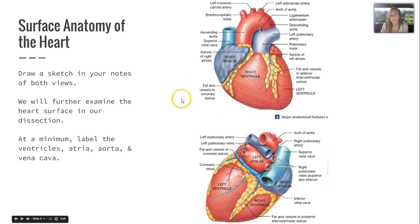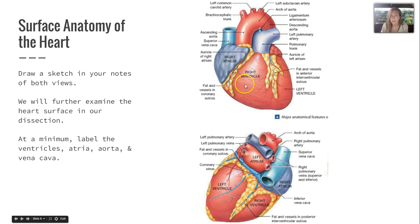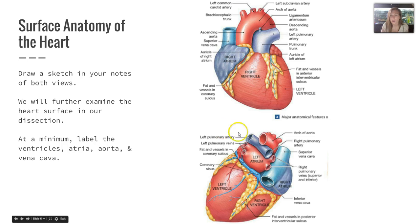We won't go into surface anatomy in depth right now since we'll do a dissection in class, but go ahead and draw a sketch in your notes. At a minimum, label the ventricles, the atria (plural for atrium), and then the aorta and the vena cava.